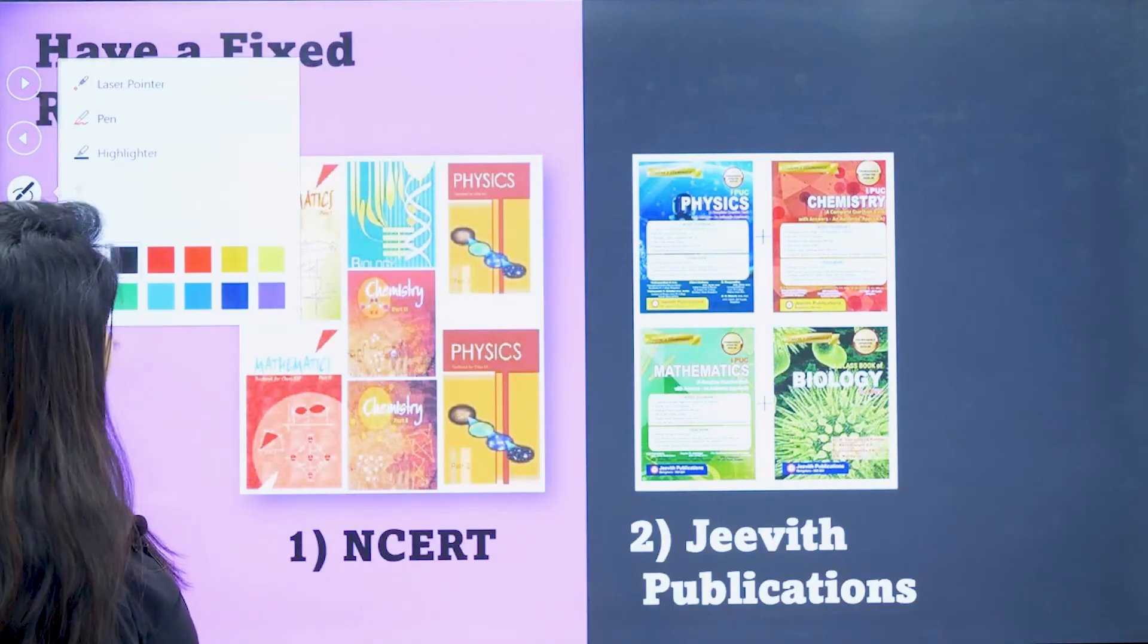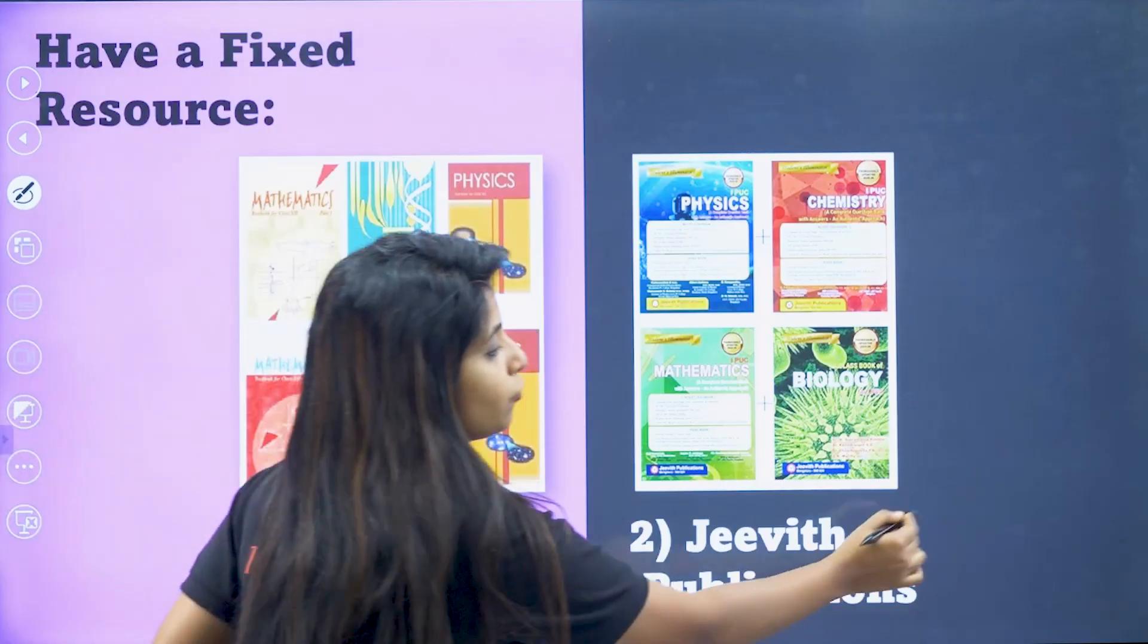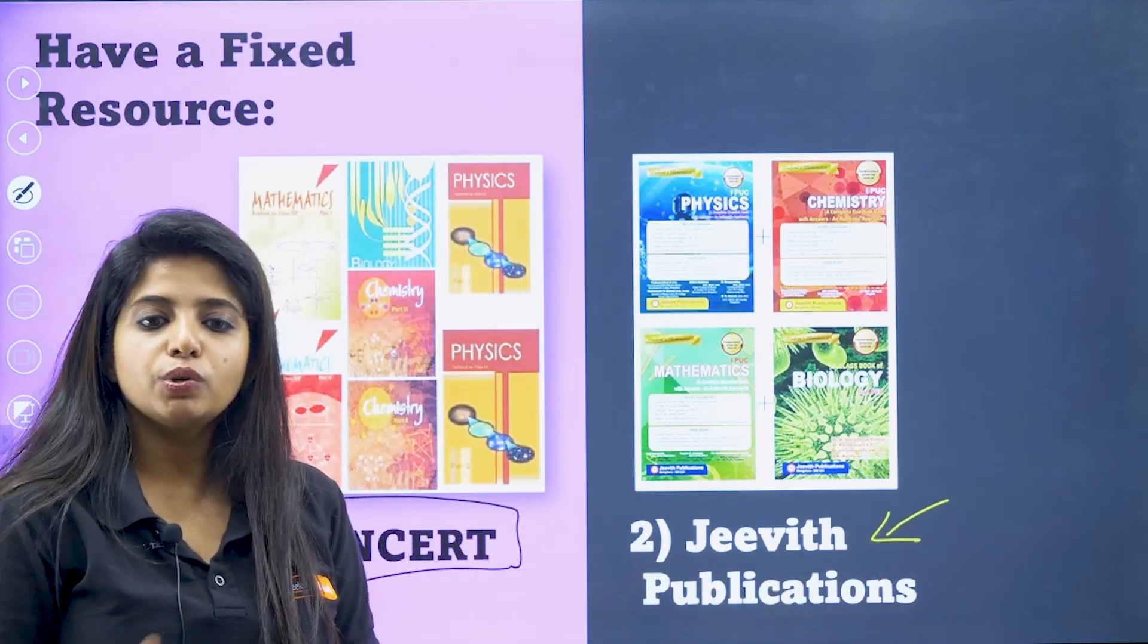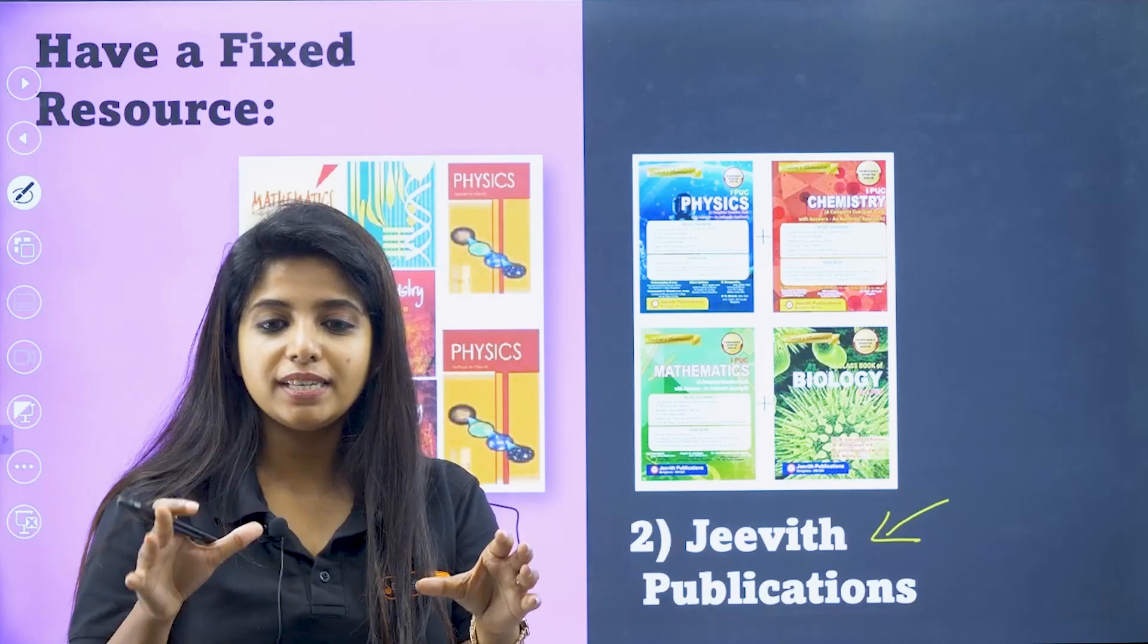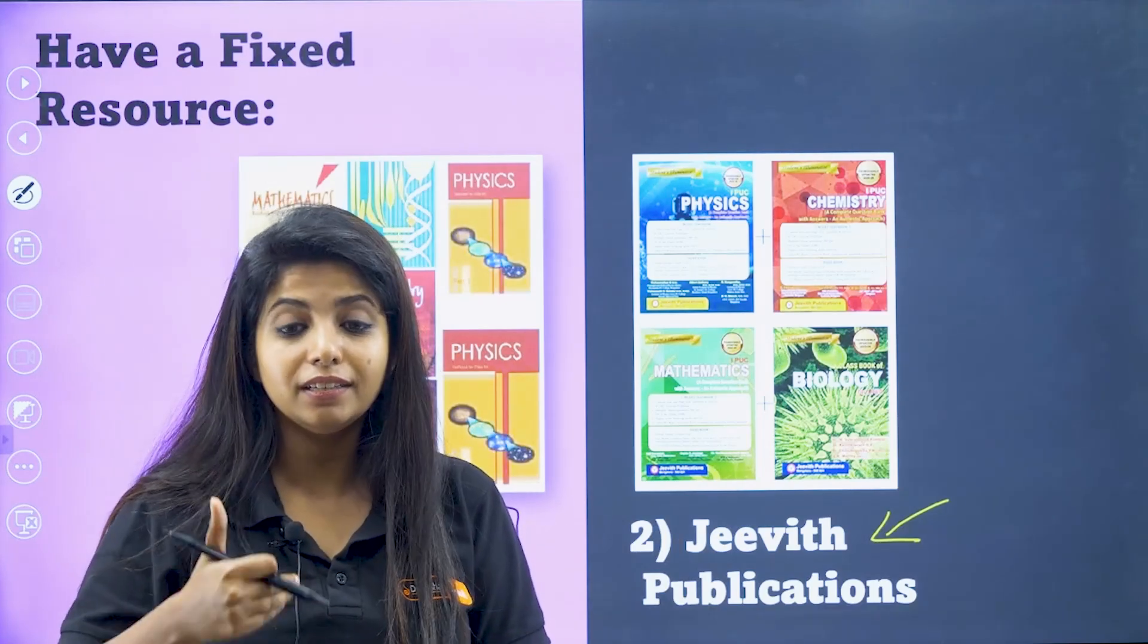And the resources that you have to pick in is your NCERT for sure. For PU2 question practice, you can look for Jeevit publication books. This is available for all the subjects. It is done year-wise as well, so you get an understanding of what are the questions that are being repeated every single now and then.